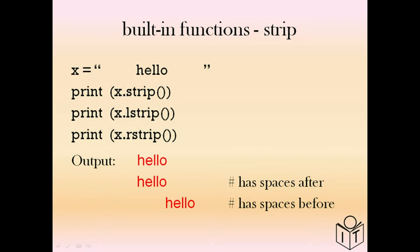Another function already in Python is strip. Here we have 'hello' but it has some spaces before and after. If we print strip, it will just print 'hello'. If we use lstrip — short for left strip — it will strip the spaces before the hello. If we use rstrip, it will strip the spaces from behind. So the first output is hello with no spaces, the second has spaces after, and the third has spaces before.